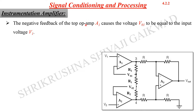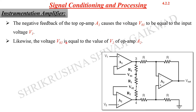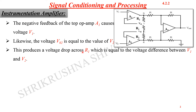The negative feedback of the top operational amplifier A1 causes the voltage drop V01 to be equal to the input voltage V1. So the voltage drop at this point V01 is developed because of the input provided at terminal V1. Likewise, the voltage drop V02, which equals V2, is available at the output of amplifier A2. This produces the voltage drop across R1, which is equal to the voltage difference between V1 and V2.